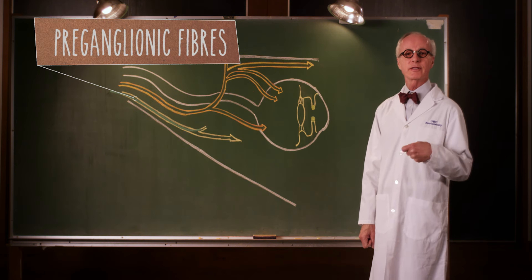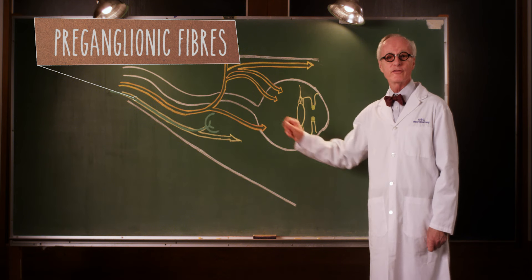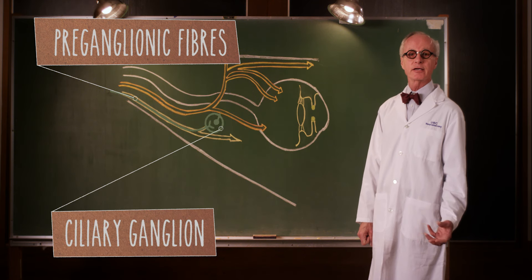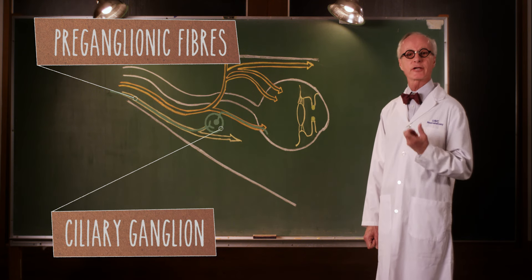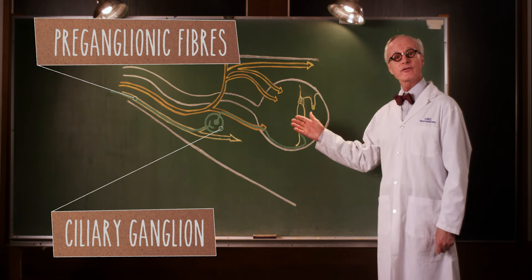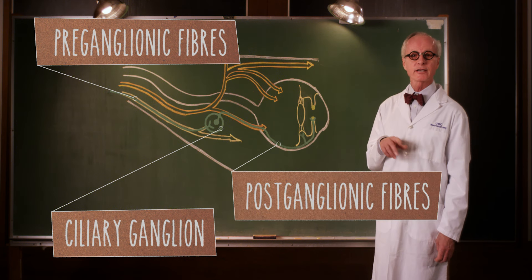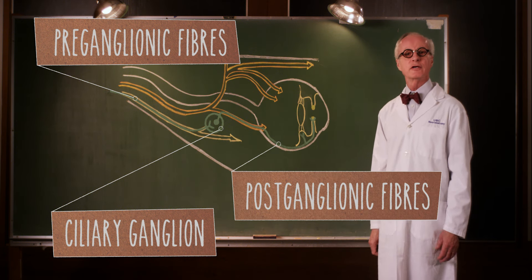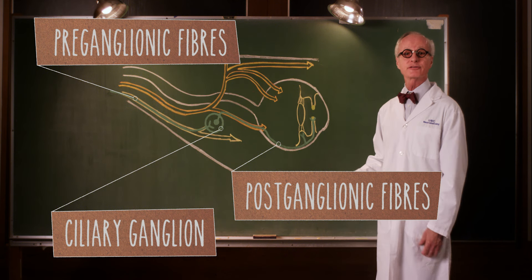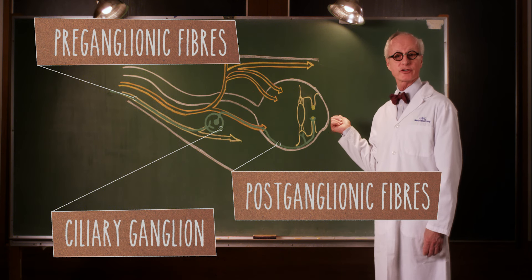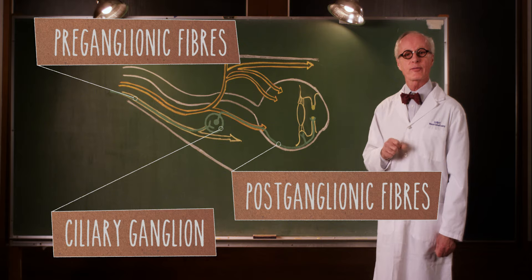Let's follow the course of these fibers from cranial nerve three to their target tissues. Preganglionic fibers carried in three leave the nerve and enter the ciliary ganglion, which hangs off some of the ciliary nerves. Here they synapse and postganglionic fibers follow the ciliary nerves into the eyeball to ultimately reach constrictor pupillae. They also reach the ciliary muscle.